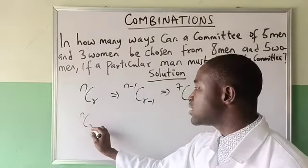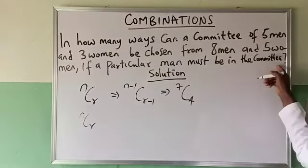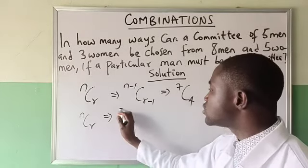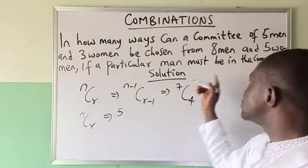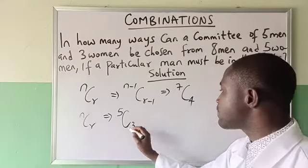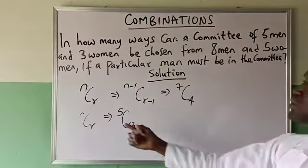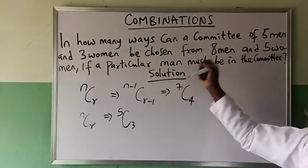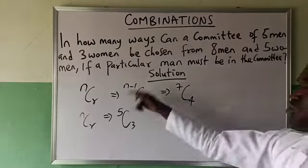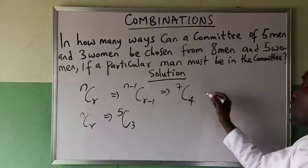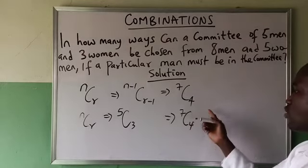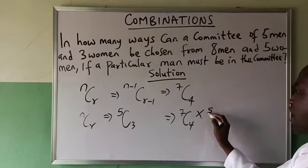For women, is there any restriction? No. For women we have to select three women from the total of five. We don't subtract because there is no restriction that a particular woman must be there. So we just see how to select them. That implies seven combination four for men, times five combination three for women.